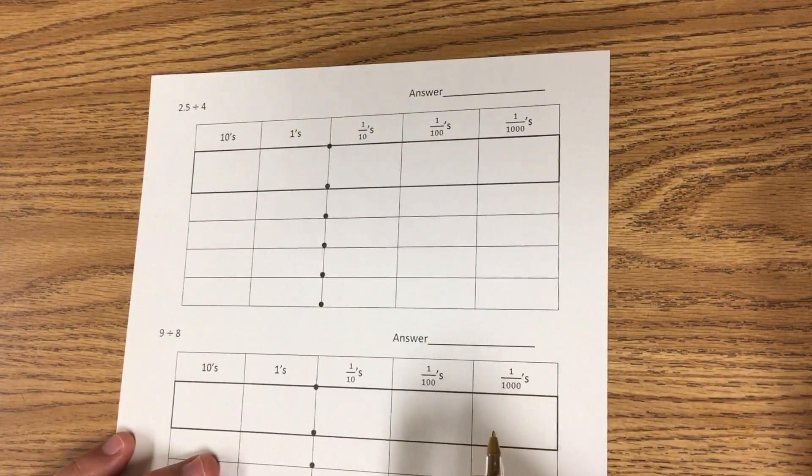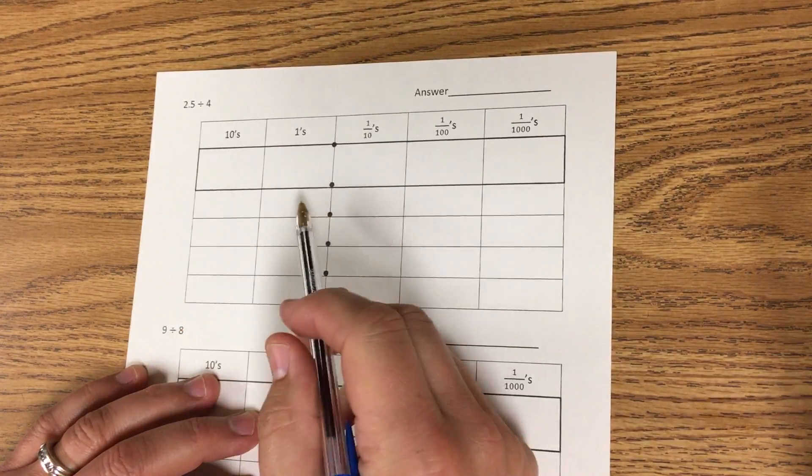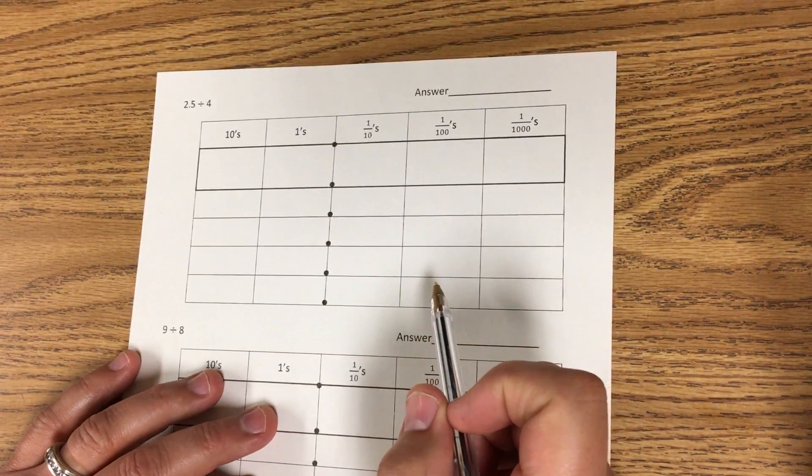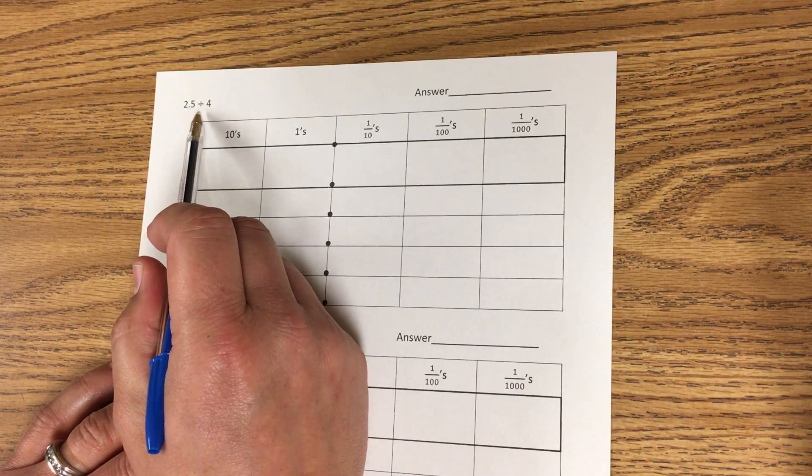Hi, Mr. Delgado here. I'm gonna show how to divide by using a place value chart. So here I have 2 and 5 tenths divided by 4.